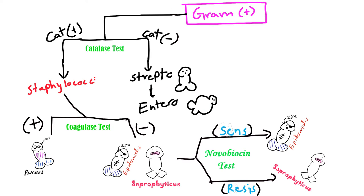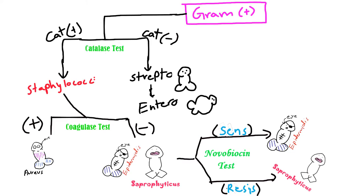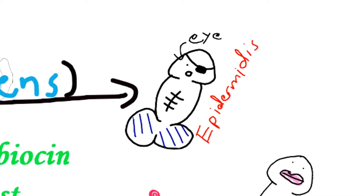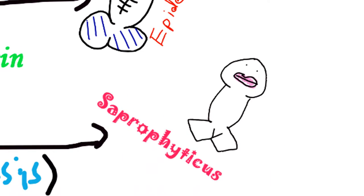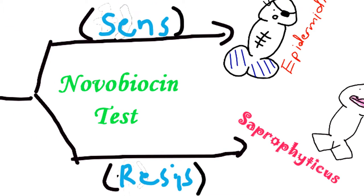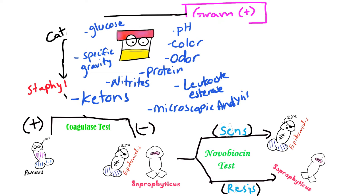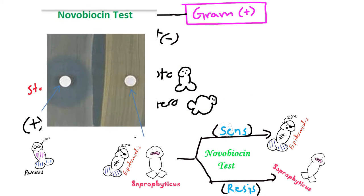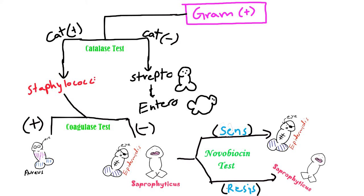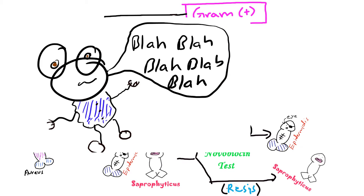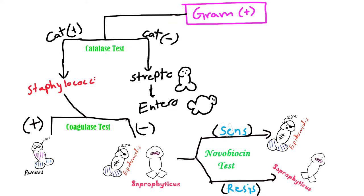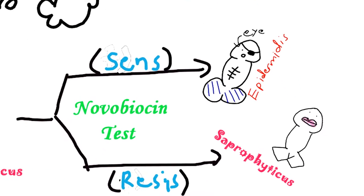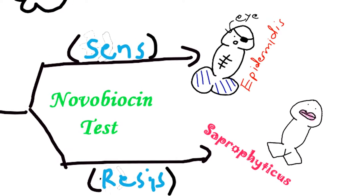After we differentiate those two, now we just need to differentiate Staphylococcus epidermidis from Staphylococcus saprophyticus, and we can use the novobiocin test, which is just a weak antibiotic. We usually take a urine sample and place it onto a novobiocin dish and check the growth around it afterwards. The reason why we do a urine sample is because we're usually testing women with UTIs.